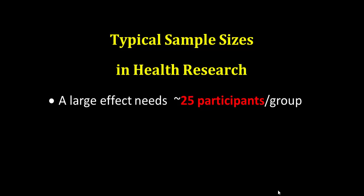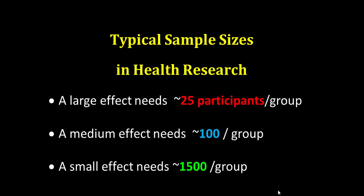So let me start at the end, let me start by showing you some typical sample sizes that you might come across in health research. For example, you would require 25 participants per group if there was a large effect to be spotted, whereas a medium effect would require around 100 participants per group. And yet for a small effect, you would need a huge 1,500 participants per group.